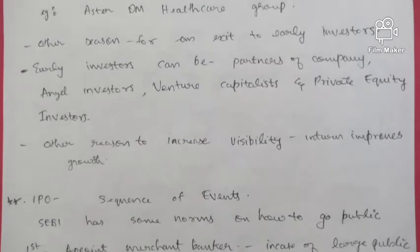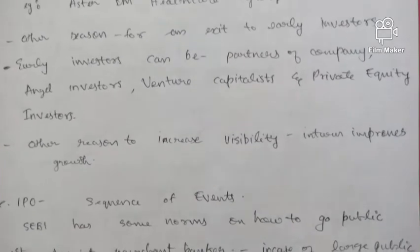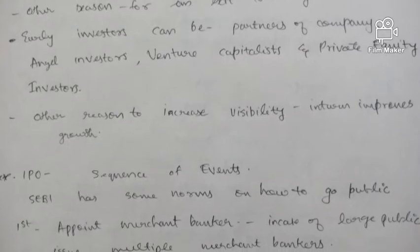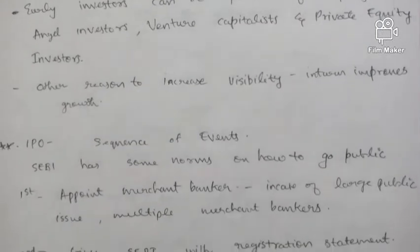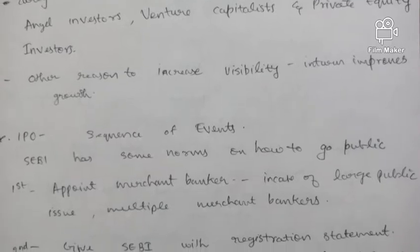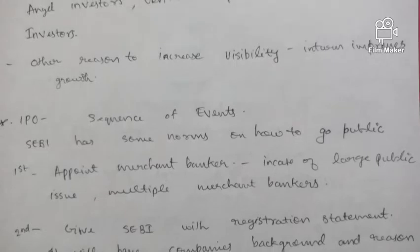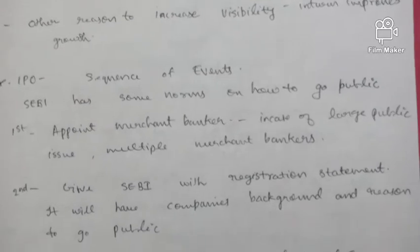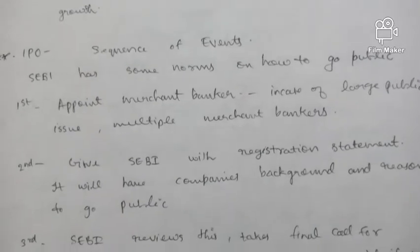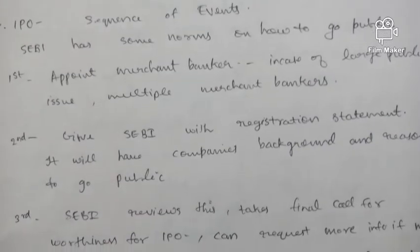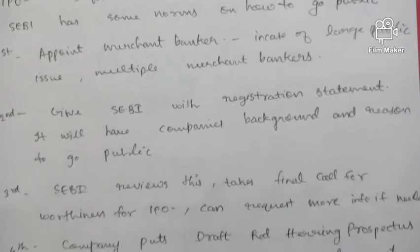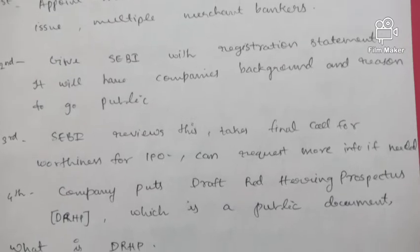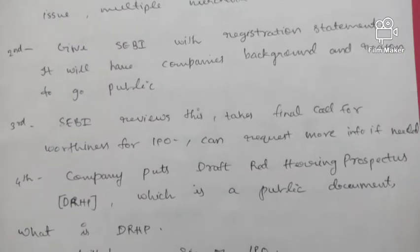Another reason is to increase their visibility in the market, which improves growth and sales. SEBI has norms on how to go public. The first step is to appoint a merchant banker — for large public issues, multiple merchant bankers are allowed. The second step is to provide SEBI with a registration statement containing the company's background and reason to go public. The third step is SEBI reviews this and takes a final call on the worthiness of the IPO.